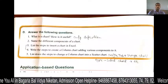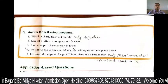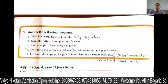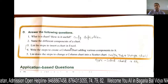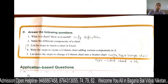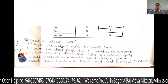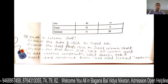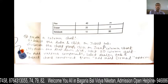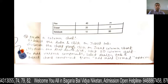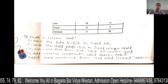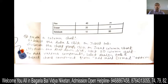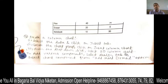Next is: list the steps to insert a chart in Excel. To create a column chart: first select the data, then click on the Insert tab. Locate the chart group, click on Insert Column Chart, and from the drop-down list select the 2D column chart.